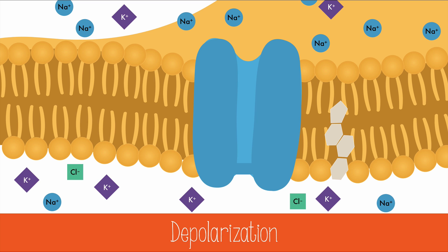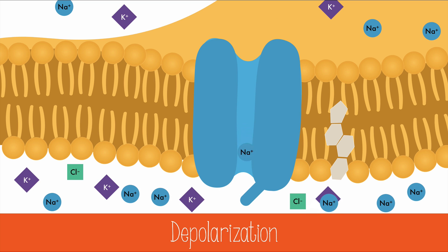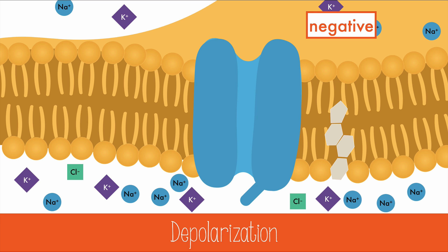The beginning of an impulse is marked by depolarization. This means that the voltage-gated sodium channel is opened, and the sodium rushes into the cell. The influx of positive charges quickly shifts the electric potential of the membrane, so that now the outside is more negative and the inside of the cell is more positive. This change in polarity will close the sodium gate.